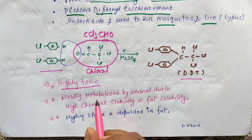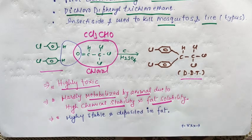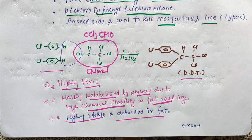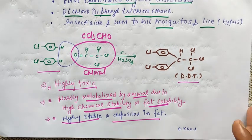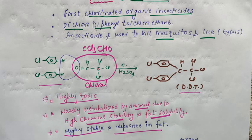DDT's most important aspect is the harmful effects - it is highly toxic. It is not easy to metabolize by animals due to high chemical stability and fat solubility. It is highly stable and deposited in fatty tissues. Even in foreign countries it is banned, though we still use it.